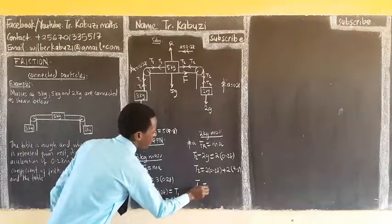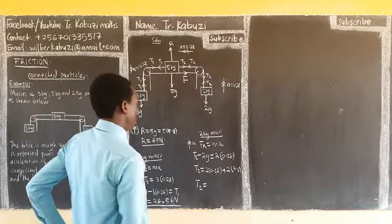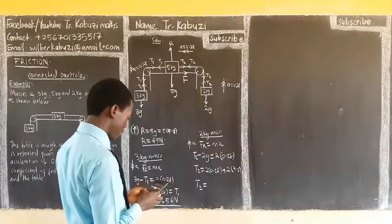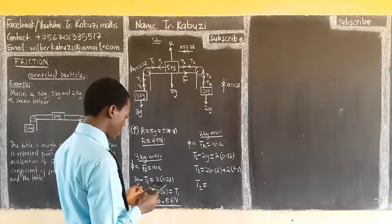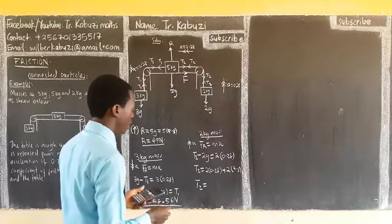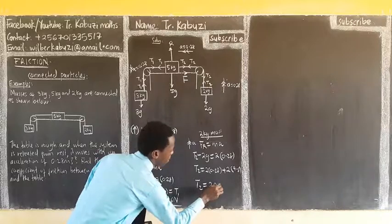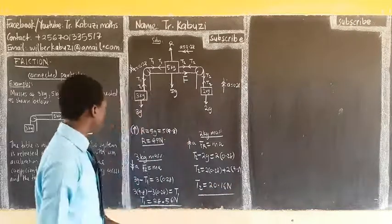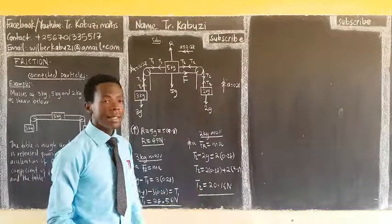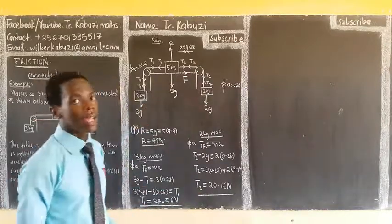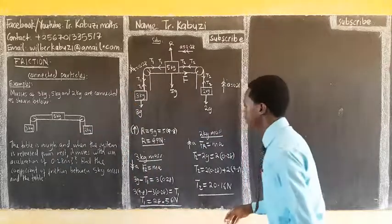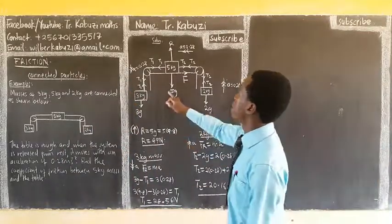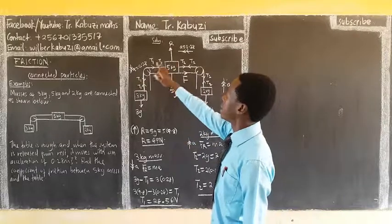So when I take this aside, magnitude T2 will be 2 into 0.28 then plus 2 into the G, which is 9.8. So magnitude T2 from here, this plus this, then you multiply by 2. It's 20.16 newtons. Why do you think this tension is bigger than this? Of course because this one is carrying a bigger weight.